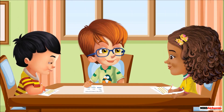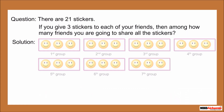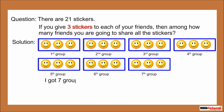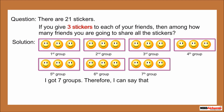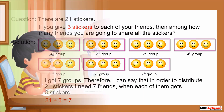I have solved my division problem using equal grouping. It is mentioned in the question that each friend gets three stickers. So I made groups of three stickers until I used up all the stickers. I got seven groups. Therefore, I can say that in order to distribute twenty-one stickers, I need seven friends when each of them gets three stickers.